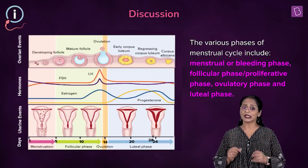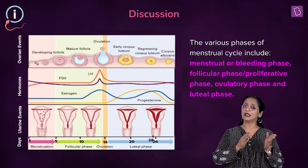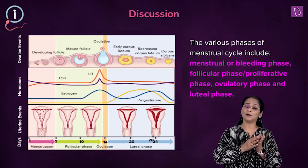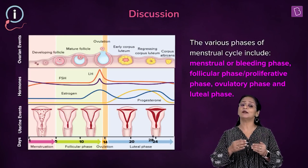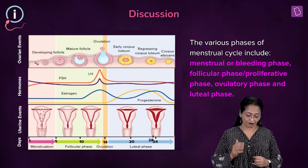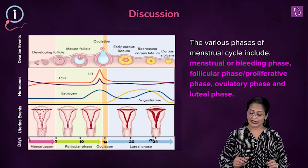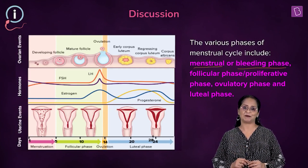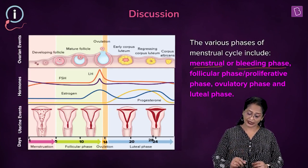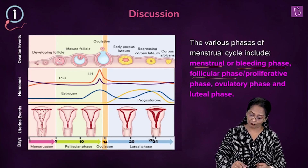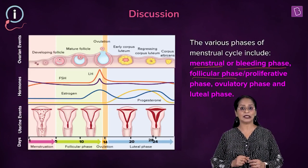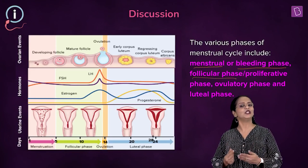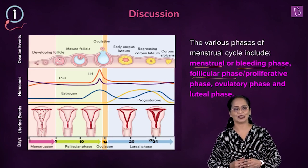The menstrual cycle can be clearly described in different phases. The first phase is the menstrual phase or the bleeding phase. The second phase is the follicular phase, the ovulatory phase, and finally the luteal phase.